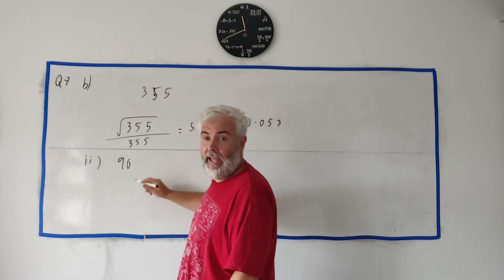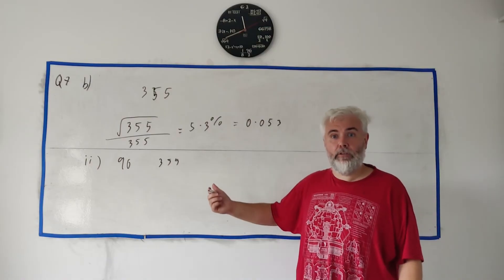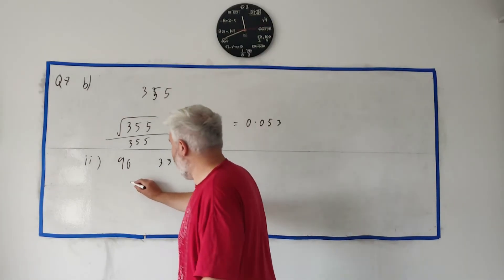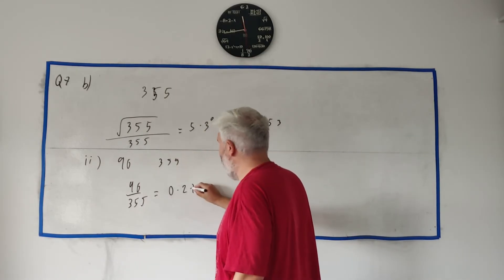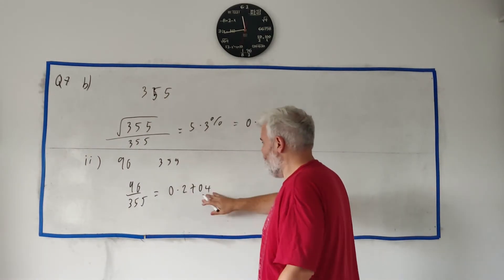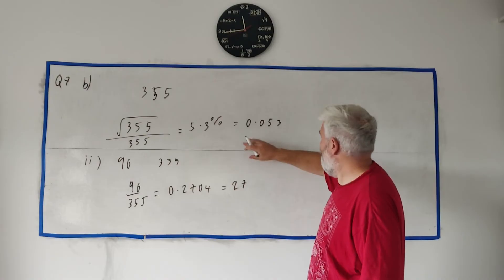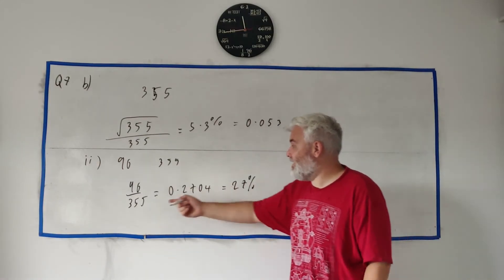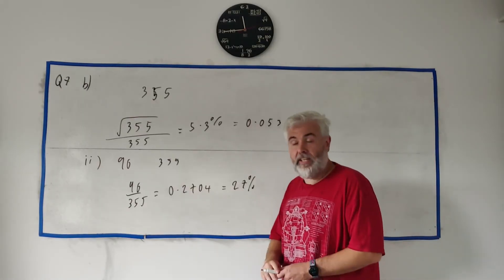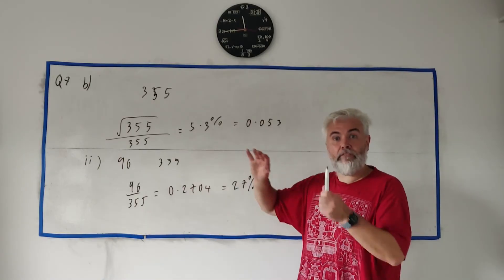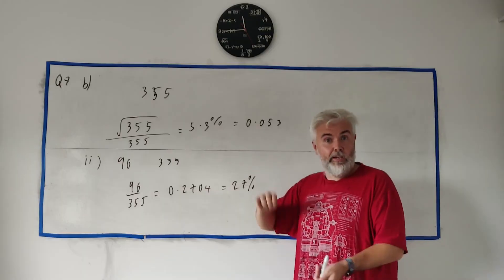In part 2, they say 96 out of the 355 people finished the race in under 25 minutes. To find the percentage: 96 divided by 355 gives approximately 0.2704, and multiplying by 100 gives 27.0%, rounded to one decimal place. So 27% of this sample finished in under 25 minutes — but be careful, that doesn't tell you what happened for everyone in 2023, since we only asked 355 people.